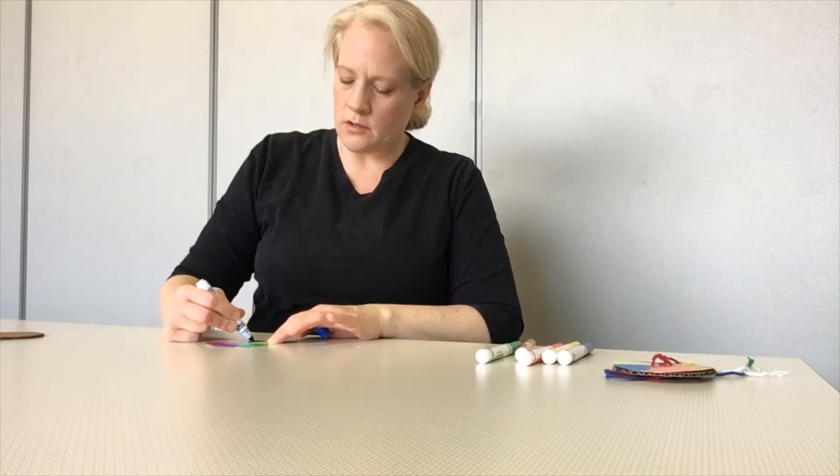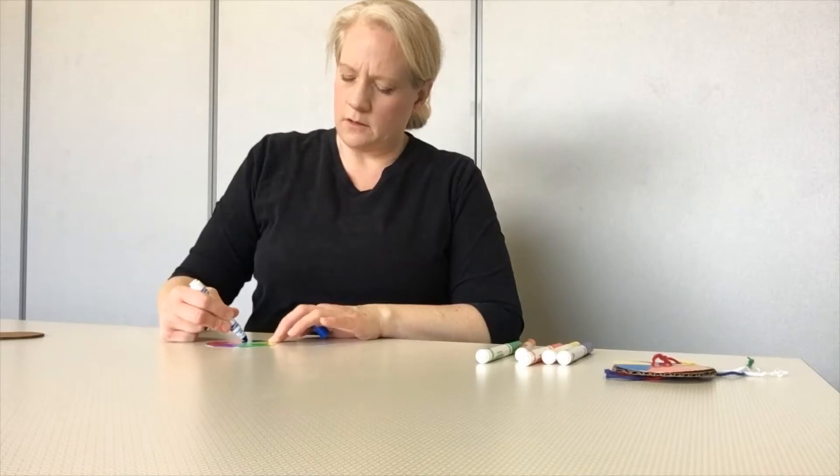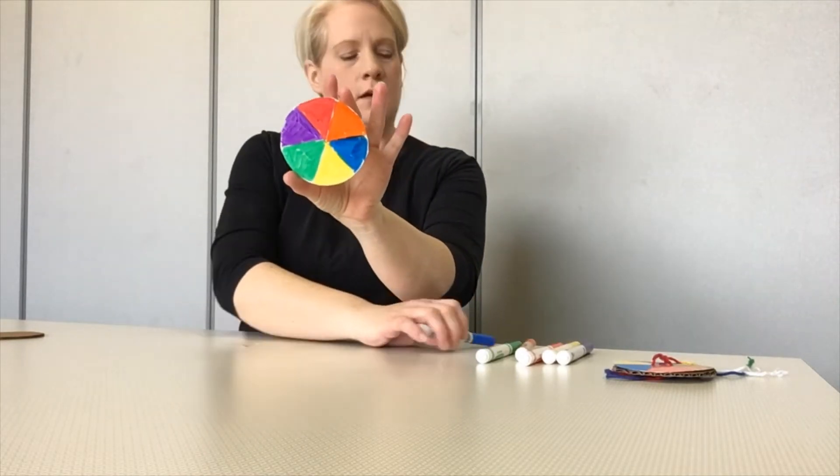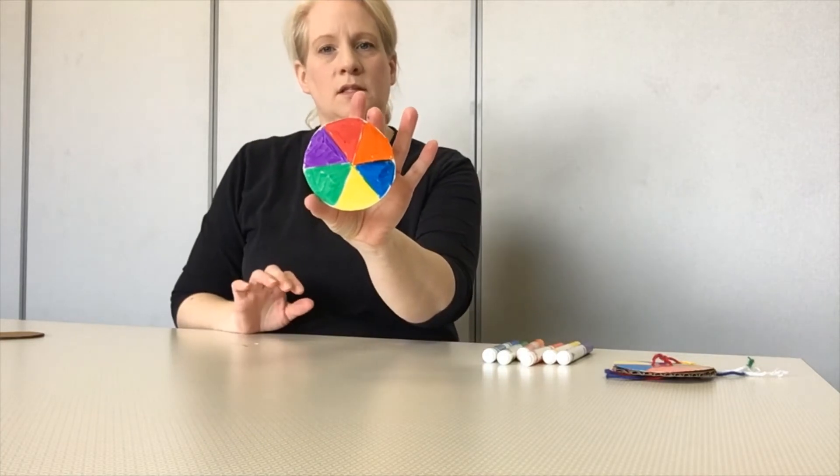And then our last color is going to be blue. So, now you have all your coloring done. Your color wheel should look a little bit like this. All those pieces of the pie are colored a different color.